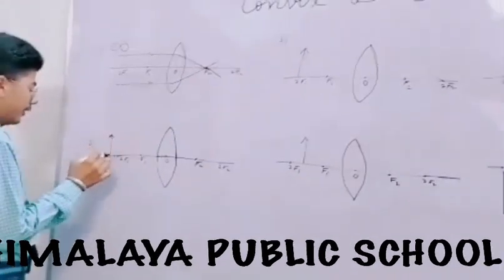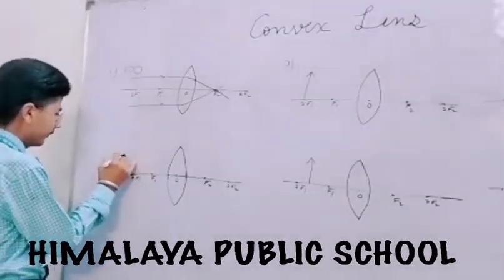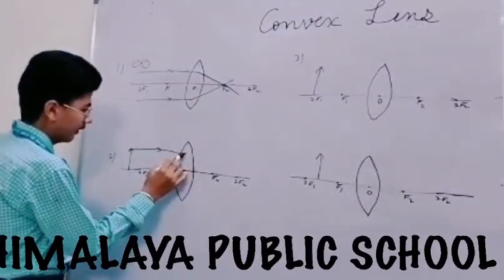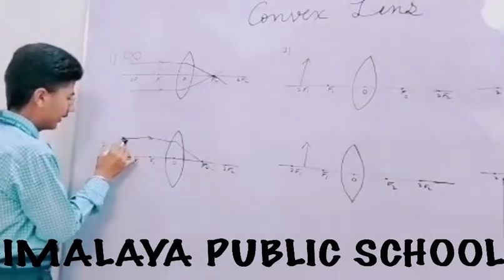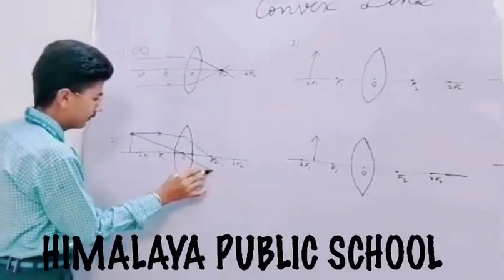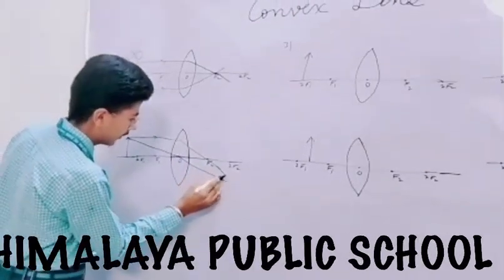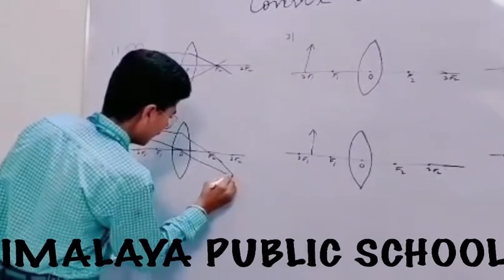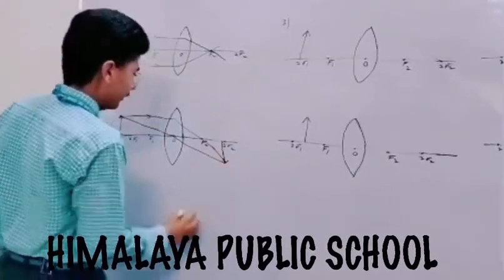Second condition is when the object is placed beyond the second focus. The first ray is coming parallel to the principal axis and it will pass through the focus. The second ray is passing through the optical center. Extending both rays, you can see the image is formed between the focus and the second focus.